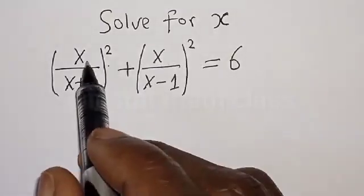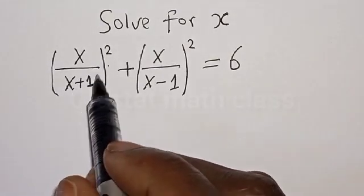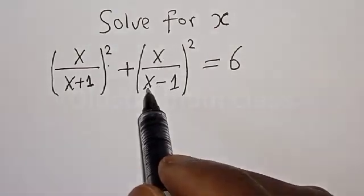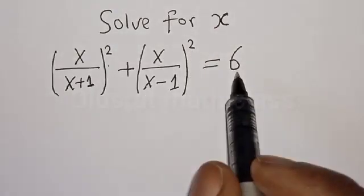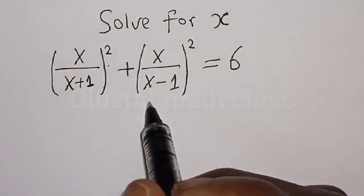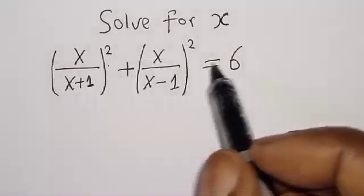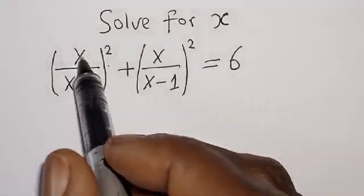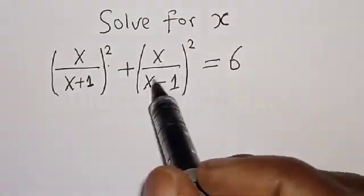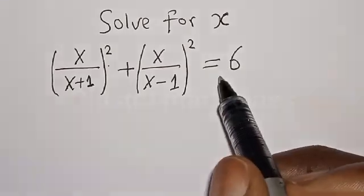For x: x divided by (x plus 1), all squared, plus x divided by (x minus 1), all squared, is equal to 6. Hi everyone, welcome to my class. In today's class, we want to find the value of x from this given equation: x divided by (x plus 1), all squared, plus x divided by (x minus 1), all squared, is equal to 6.